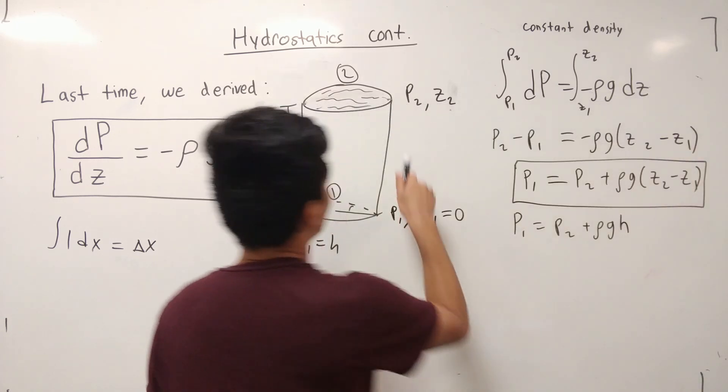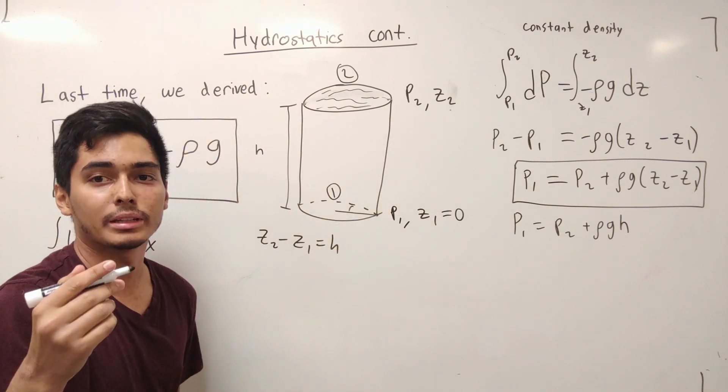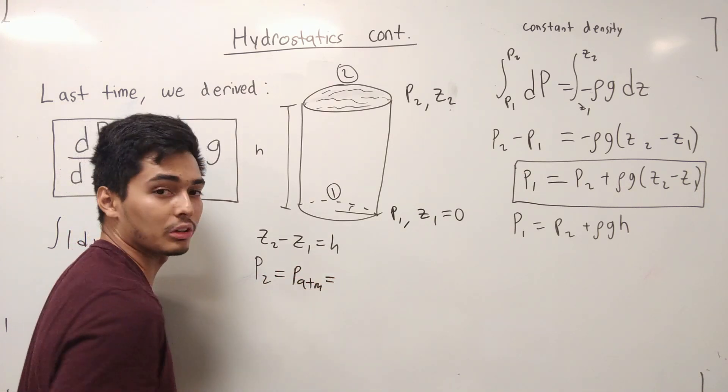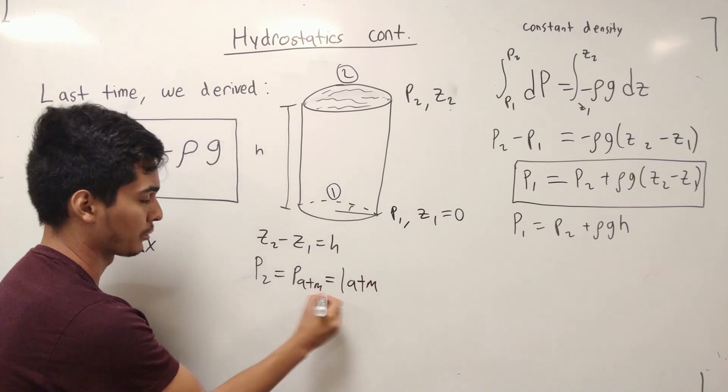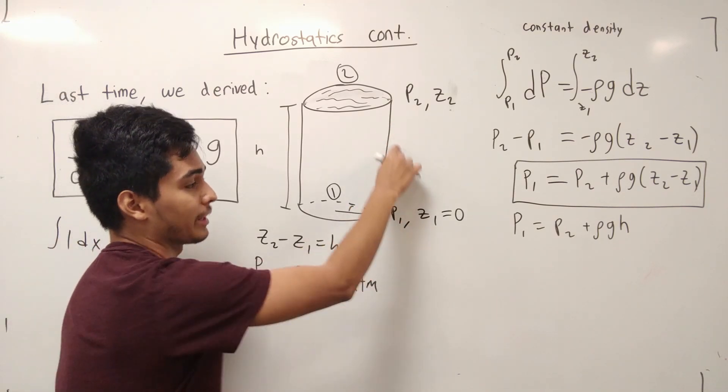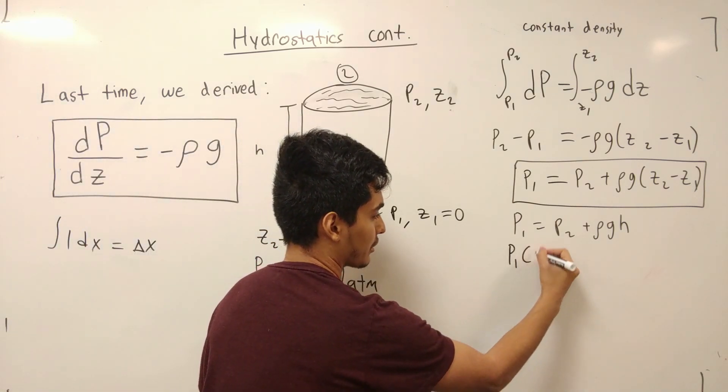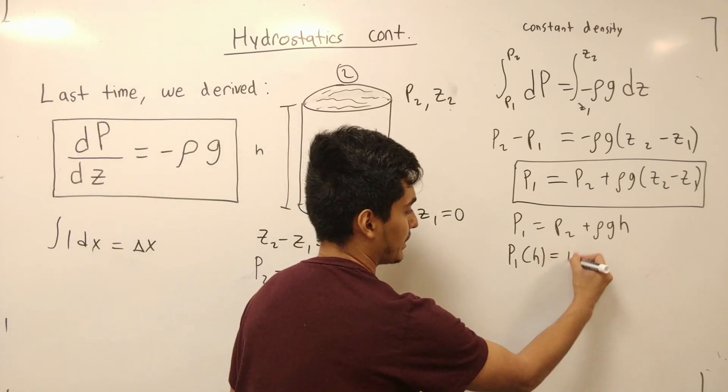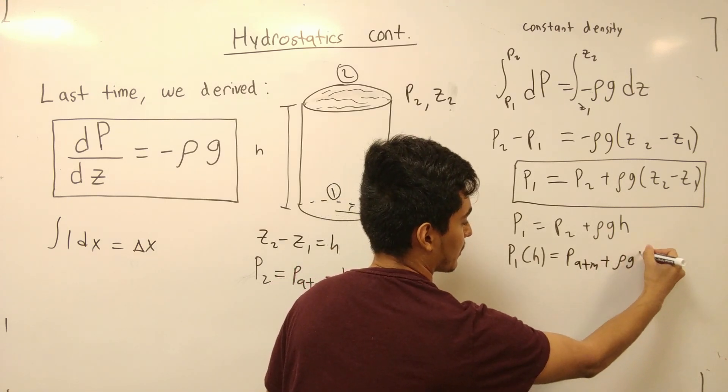As well as the fact that if we notice that P2 and P1, P1 is at the bottom of the tank, but P2 is at the top. Namely, P2 is actually the atmosphere pressure, P atm, which is going to be assumed to be one atm. So we can plug that in here.